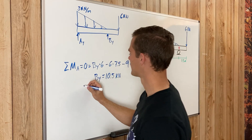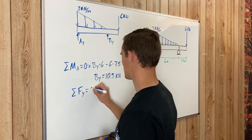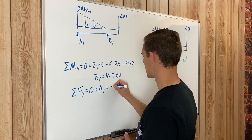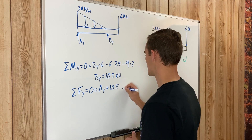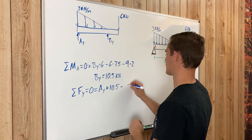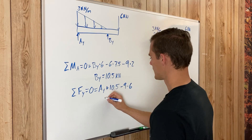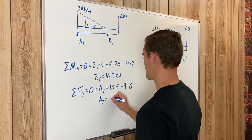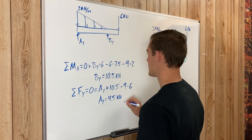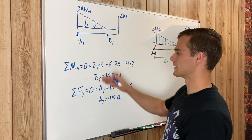Now we can sum forces in the Y direction and solve for A_y. Sum of forces in Y equals zero: A_y plus B_y are both going in the positive Y direction (up is positive), minus nine kilonewtons from the distributed load, minus six from the point load. We get A_y equals 4.5 kilonewtons. We'll label that up on the diagram and draw our shear and moment axes just below it so we can line things up.